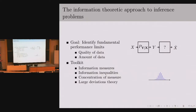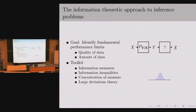Now I'll talk about the toolkit I bring to these problems. I apply information-theoretic and statistical tools to inference problems motivated by the privacy and security concerns I raised. The information-theoretic approach is to identify the fundamental performance limits — limits in the quality or amount of data needed to make accurate decisions. The mathematical toolkit involves information measures, information inequalities, the concentration of measure phenomenon, large deviations theory, and more.